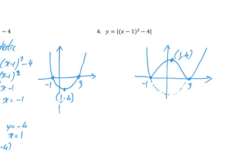So long story short: modulus just gives the size, the absolute size of something. And when you're drawing the modulus of a graph, any bits which are underneath the axes get flipped up above the axes.